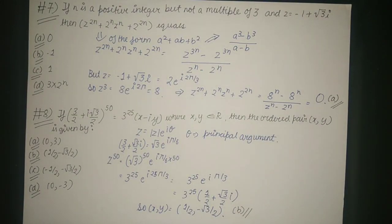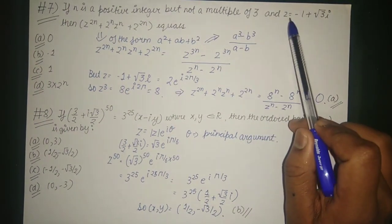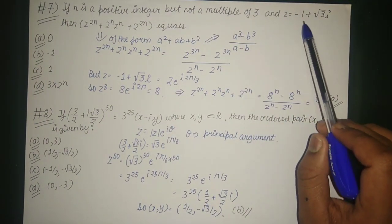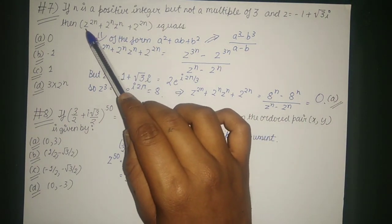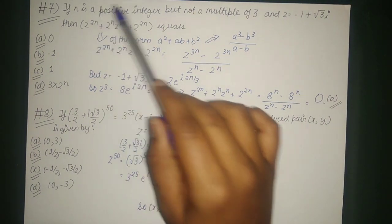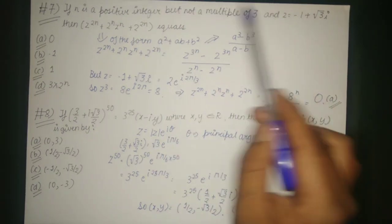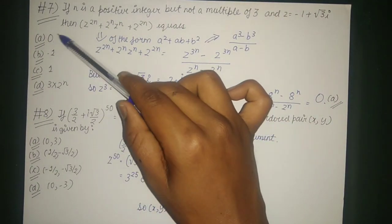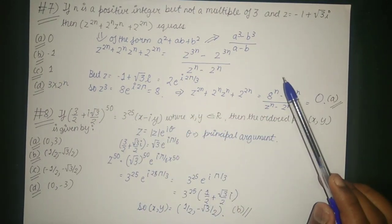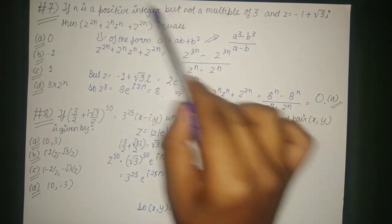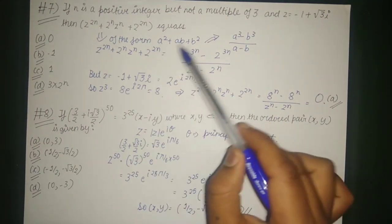Next question: if n is a positive integer but not a multiple of 3, and z = -1 + √3·i, find the value of z^(2n) + 2^n·z^n + 2^(2n). We are given four options: 0, -1, 1, and 3·2^n.